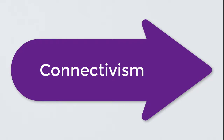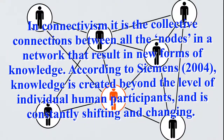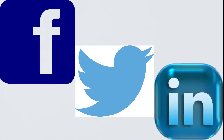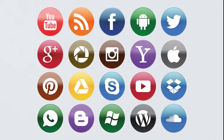In connectivism, it is the collective connections between all the nodes in a network that results in new forms of knowledge. According to Simons, knowledge is created beyond the level of individual human participants and is constantly shifting and changing. The factors that influence learning in connectivism are diversity of network, strength of ties, and context of occurrence. Today, our networks are expressed in tools like Facebook, Twitter, Google Drive, and LinkedIn. Connectivism — the core skill of detecting connections between ideas — is a learning theory for the digital age.